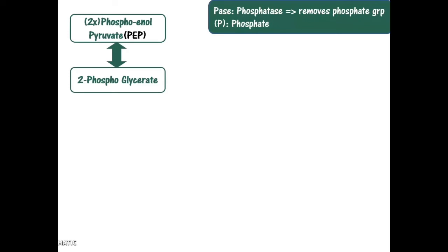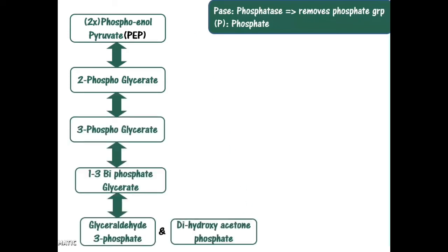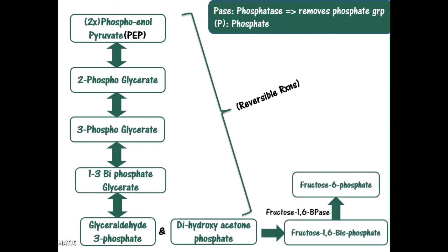Keep in mind that the step converting fructose-1,6-bisphosphate into fructose-6-phosphate is not catalyzed by the same enzyme that converts fructose-6-phosphate into fructose-1,6-bisphosphate. The forward glycolysis direction requires adding a phosphate group, which needs a kinase. But because we are removing the phosphate group from carbon number 1 in gluconeogenesis, we need a phosphatase instead. For that reason, this step is not mediated by the same enzyme present in glycolysis.